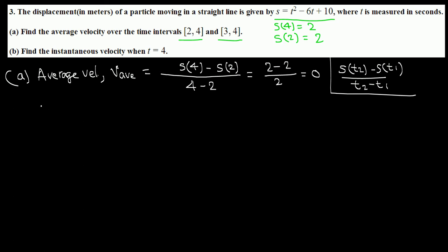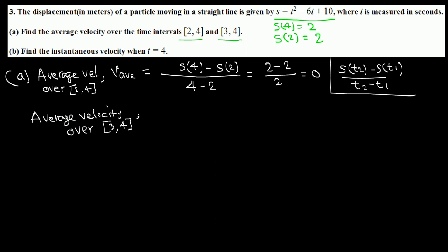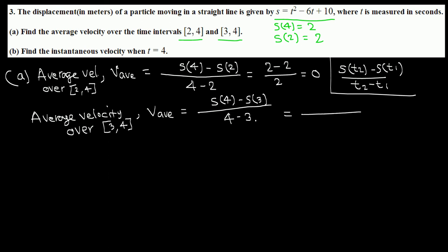Next, average velocity over [3,4]. The average velocity is rise over run. Run means change in time: 4 minus 3. The corresponding displacements on top: s(4) minus s(3), and 4 minus 3 is 1.